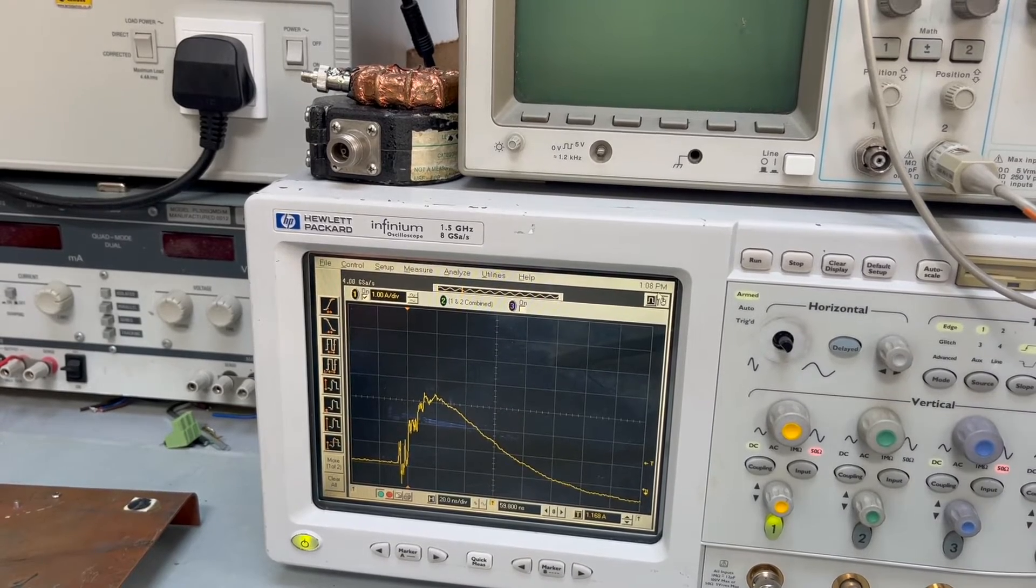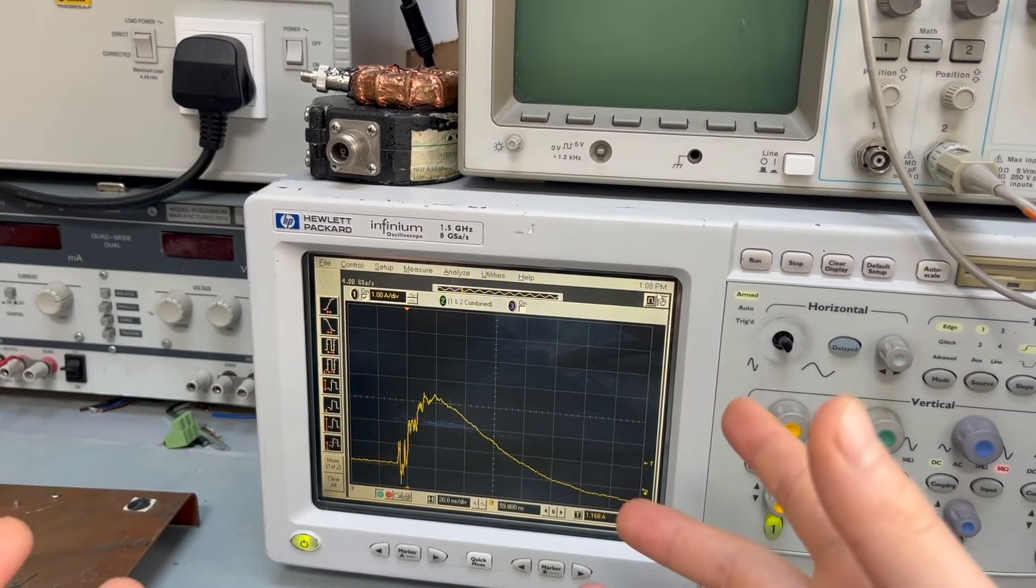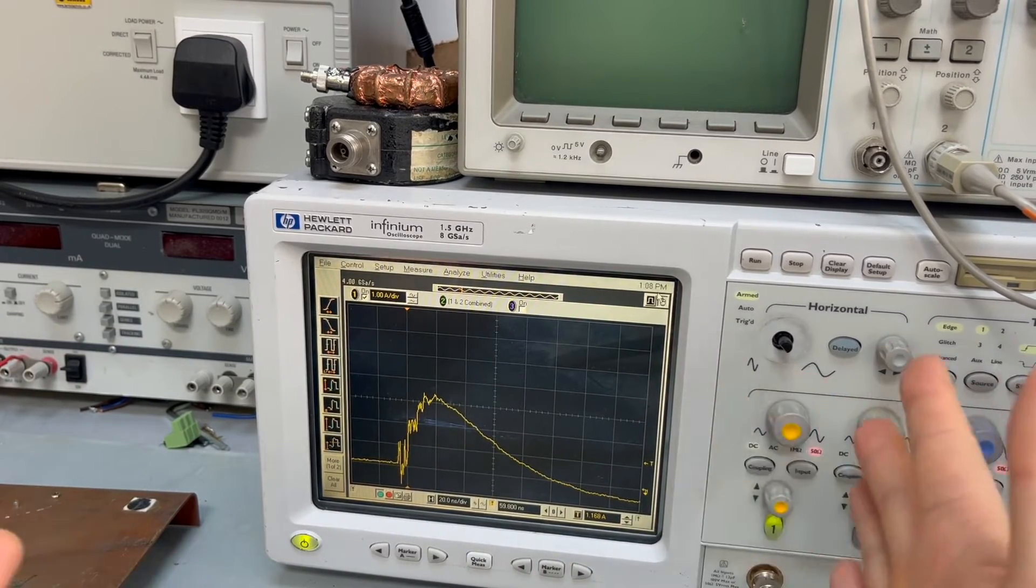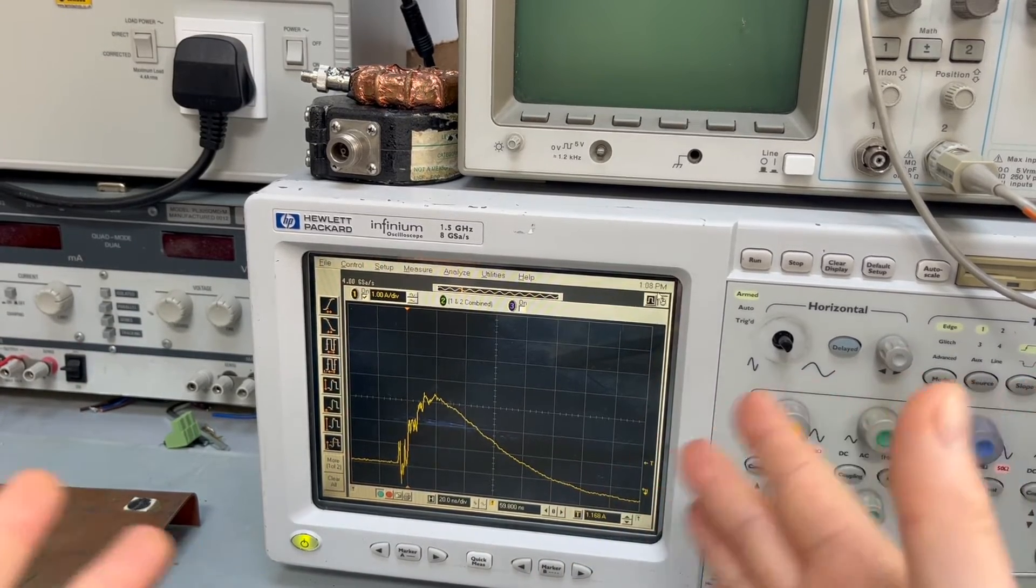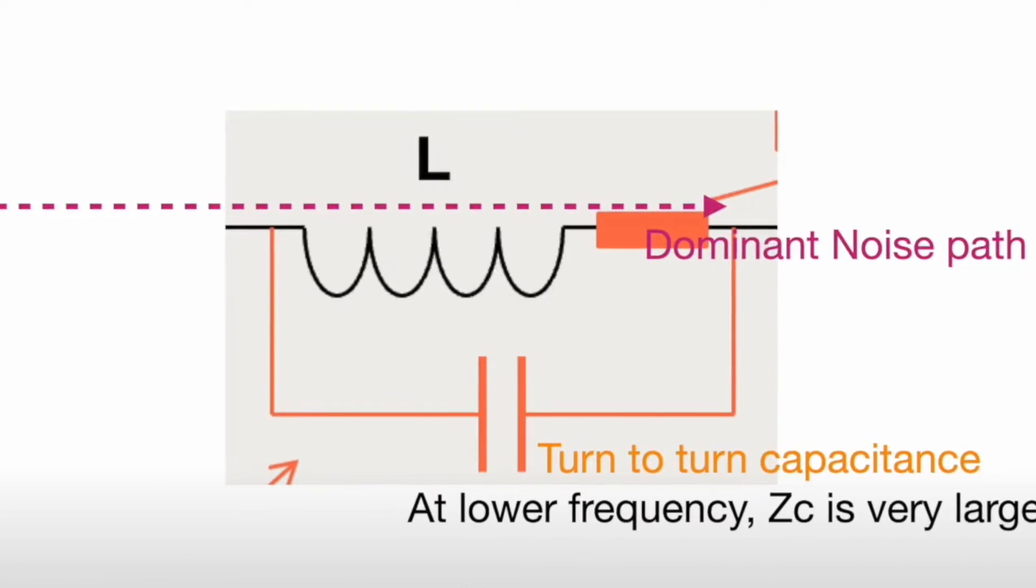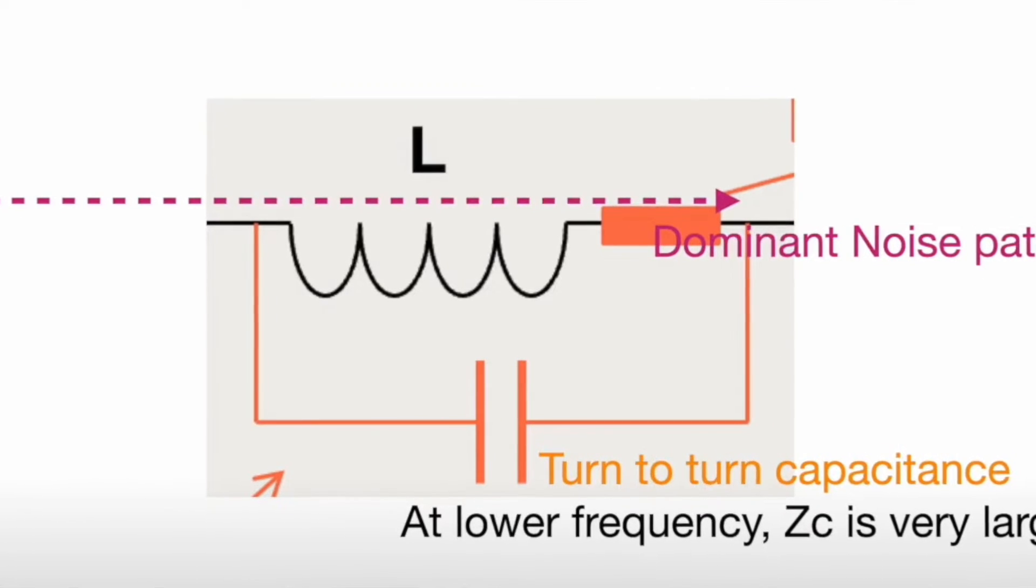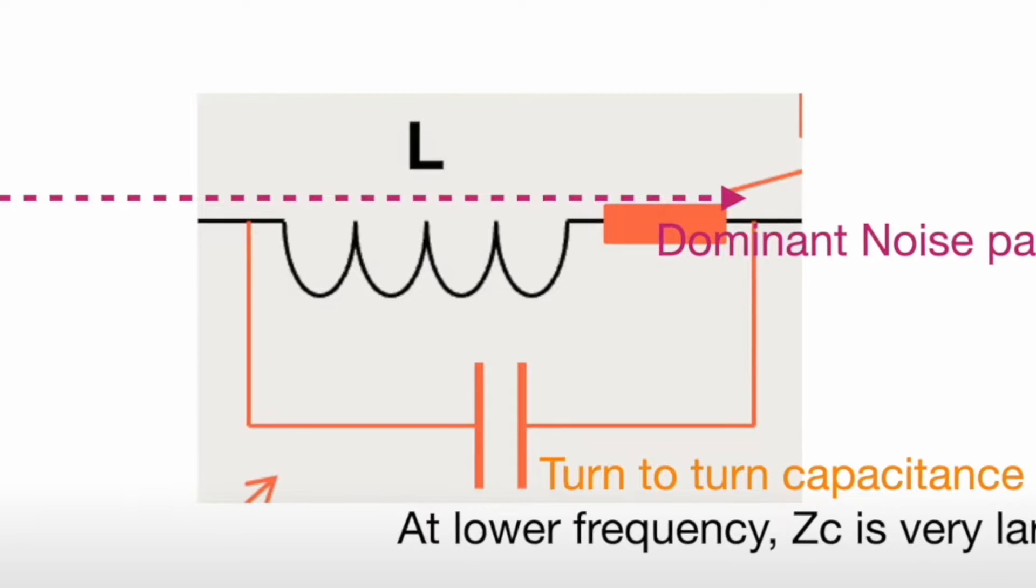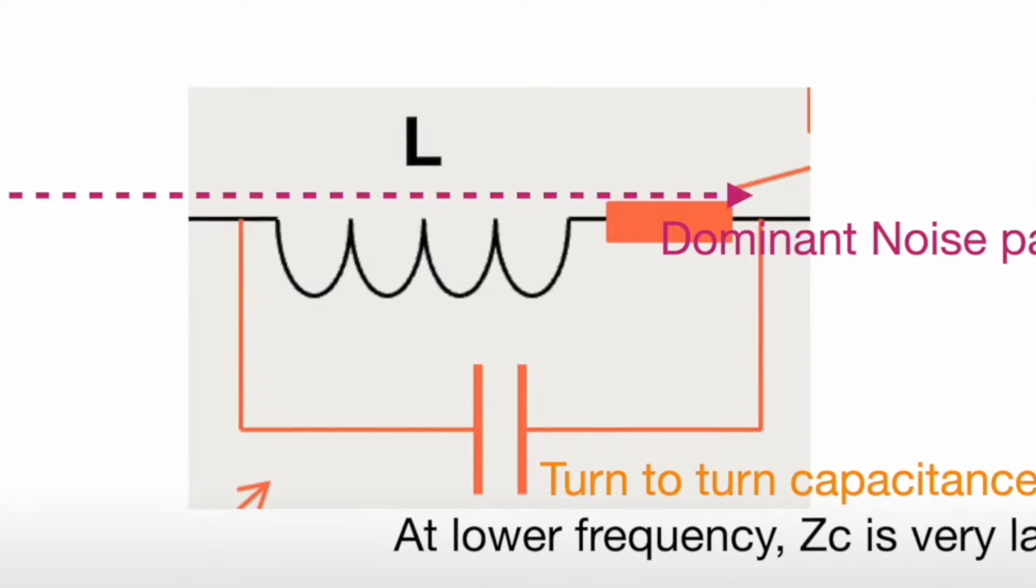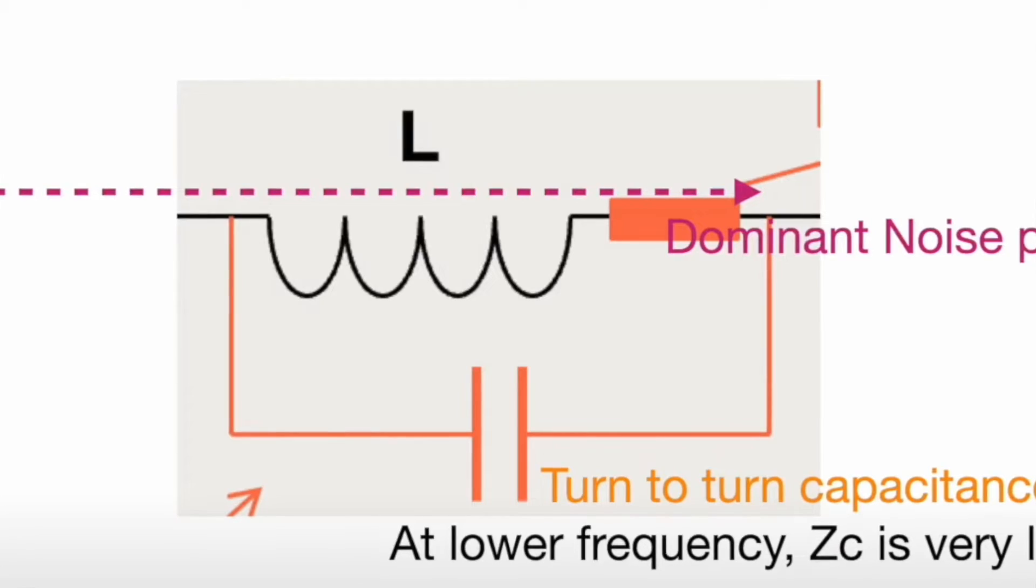Well, we explained in the previous episodes, that if you have a multi-turn ferrite core, you introduce inter, turn to turn capacitance, interwinding capacitance. And that basically is your capacitance, then you naturally form a resonance tank circuit. And the more turns you have, for example, in the previous case, we have five turn, then the more capacitance you have.